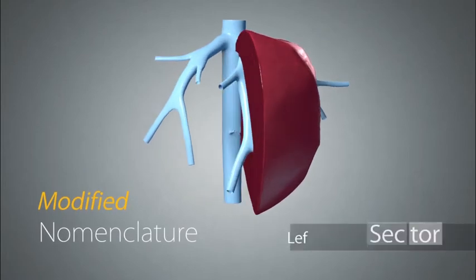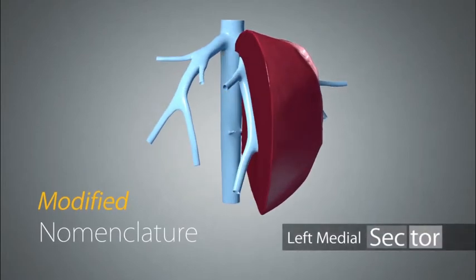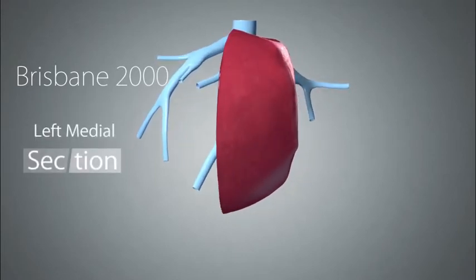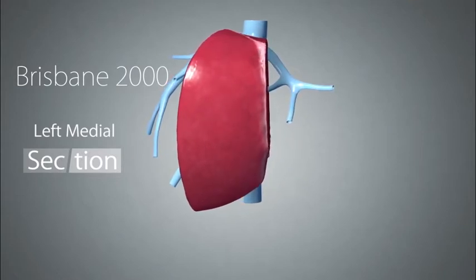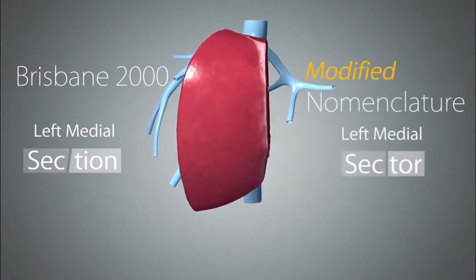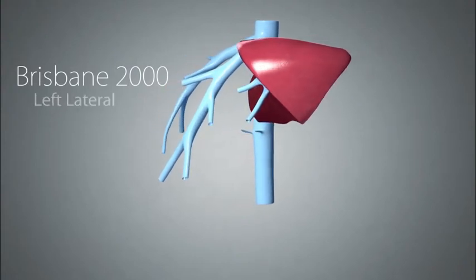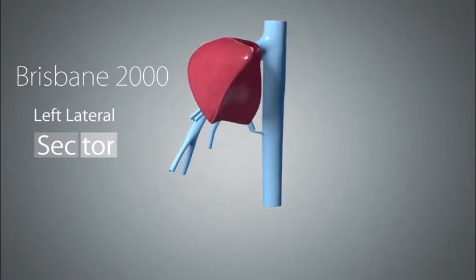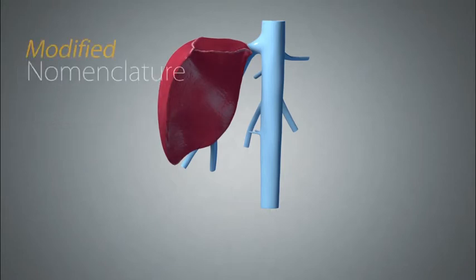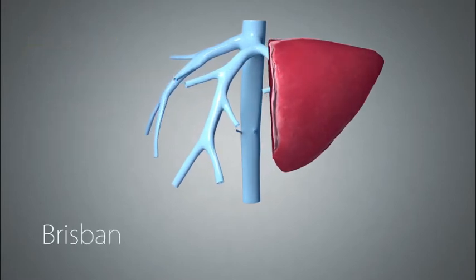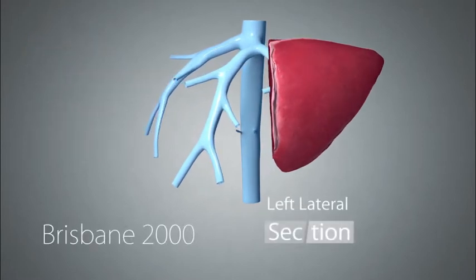Thus, the left medial sector from now on will refer to the area of liver between the middle hepatic vein and the falciform ligament. This area is termed the left medial section by Brisbane 2000 terminology, but we will refer to it as the left medial sector under the modified nomenclature system.